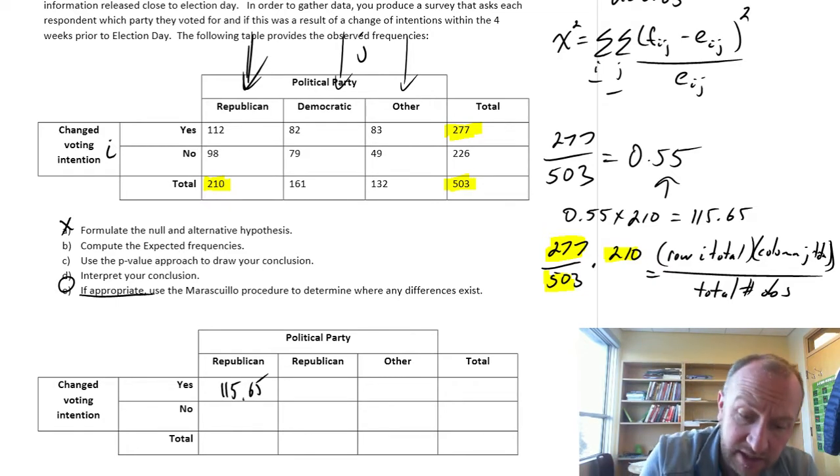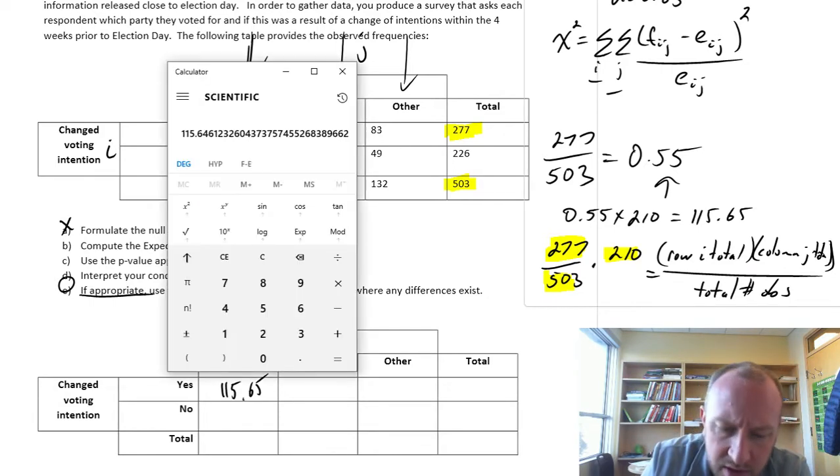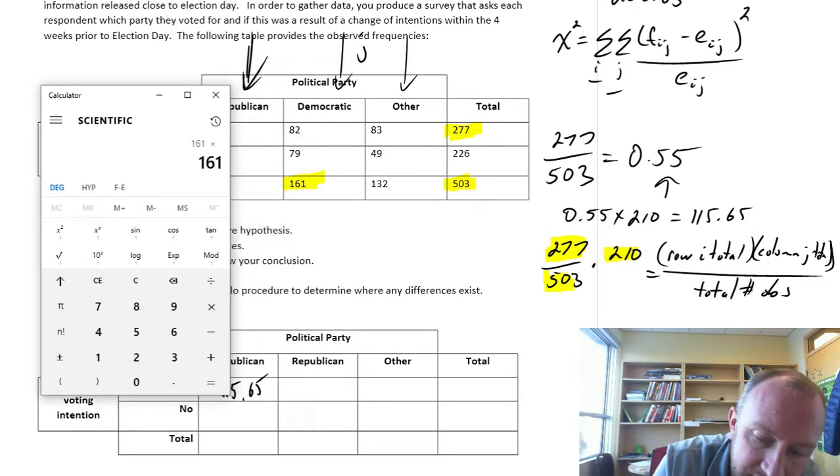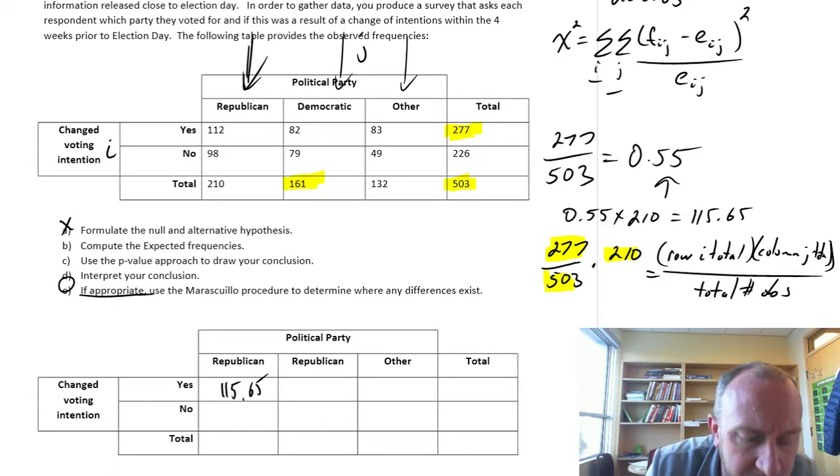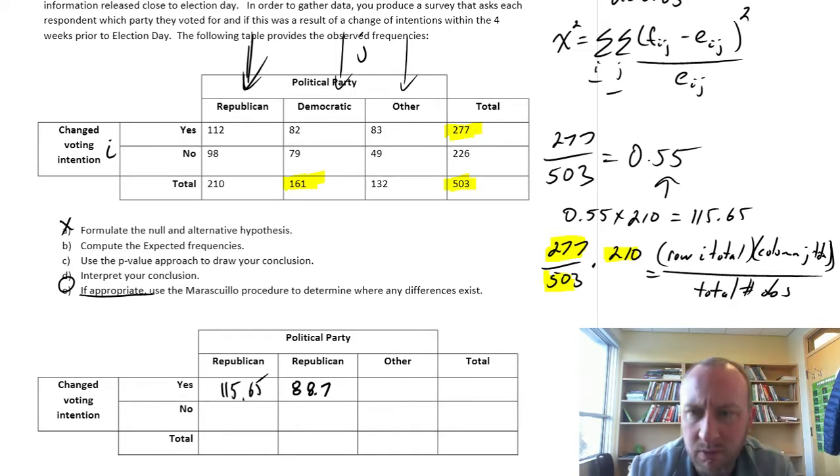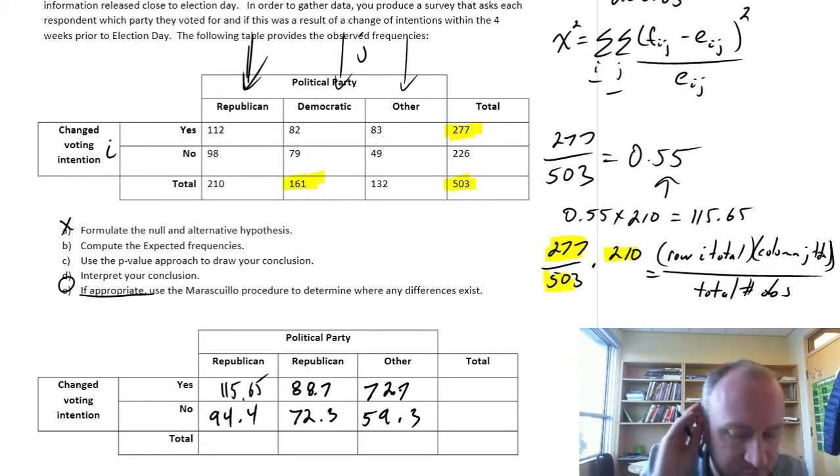So now we can go through and calculate all the rest. So if we look at this one here, this is going to be then 161, 161 times 277 divided by 503. So that's going to be something, oh yeah, 88 points. Let's round at 88.7. Grab another pen, 88.7. Okay, now I'm going to skip ahead. I don't want to go through all of these calculations, it'll just take too long. I've got them on the screen here in front of me. So the next one, 72.7, the next is 94.4, 72.3, and 59.3.